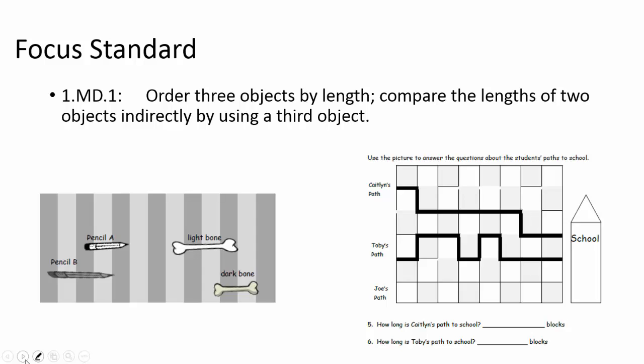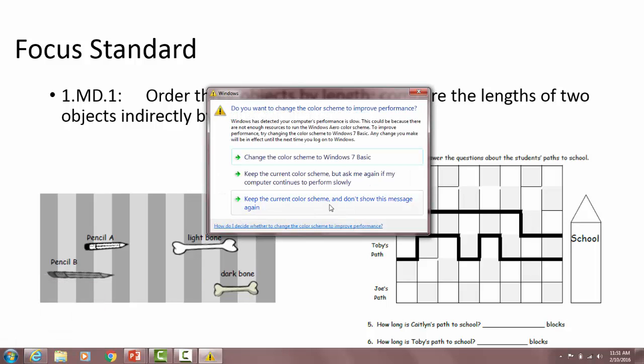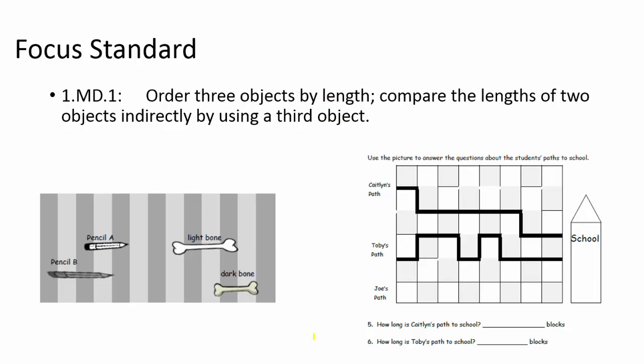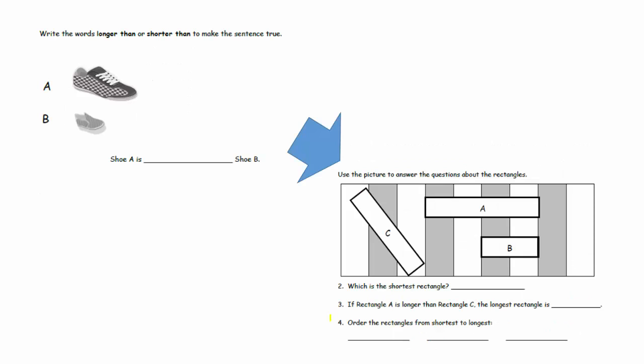The focus standard is about ordering three objects by length and being able to compare them using a third object. Students do this in many different ways — you can see problems represented quite differently, but really using that third measurement piece, whether comparing paths using squares or using rectangular lines to compare bones. As you can see through the module, it develops from straightforward longer/shorter comparisons to using units to order things based on size.